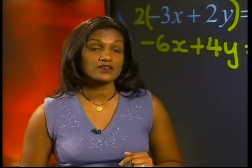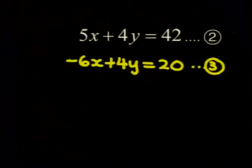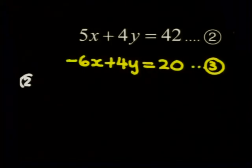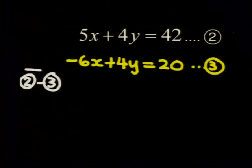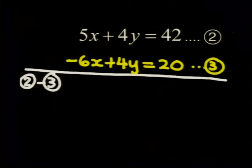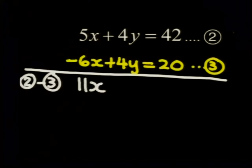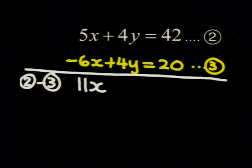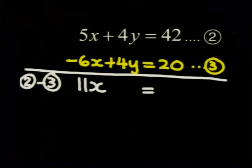Now I need to subtract. I can subtract equation 3 from equation 2 or the other way around. Either way, the y's will be eliminated. I'm going to work with equation 2 minus equation 3. I get 5x minus minus 6x, which gives me 11x. 4y minus 4y cancels the y's out. 42 minus 20 gives me 22. x is equal to 2.